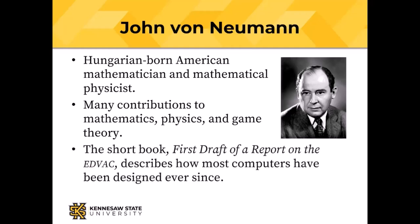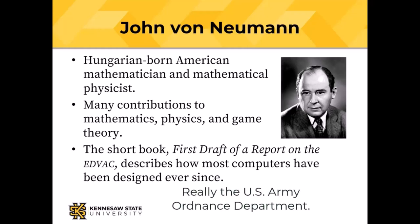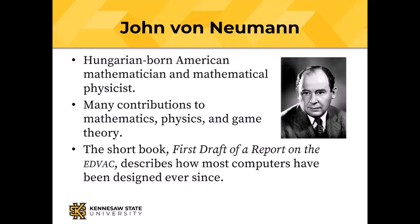His book is 47 pages printed and you can find the first draft online — it was published by the Army Corps of Engineers with only von Neumann's name on it, but it has contributions from a number of scientists and engineers of the time. It describes how computers are designed ever since 1947 up until now. The design laid out in that little book is called the von Neumann architecture.